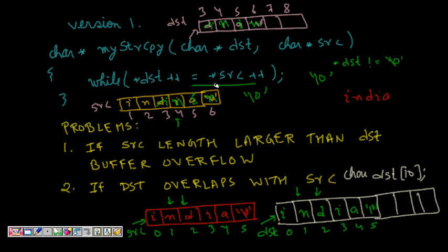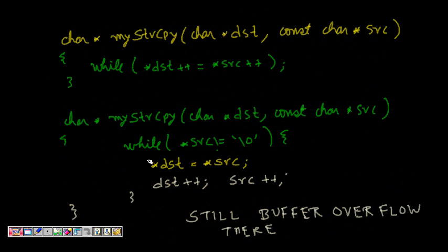There is also a buffer overflow problem: we are not checking the end of destination. If destination was assigned only five memory locations but the word in source was 100 characters long, it will overflow because we are not checking for the end of destination. So these are the two problems with this version of string copy.